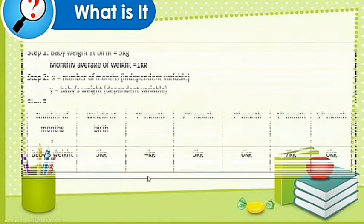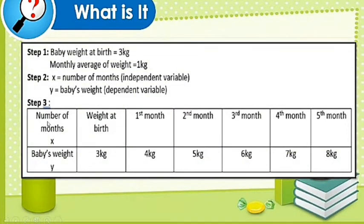So let us have the table. Step 3: Number of months. Weight at birth 3 kilograms. First month 4 kilograms, second month 5, third month 6 kilograms, fourth month 7 kilograms, five months 8 kilograms.